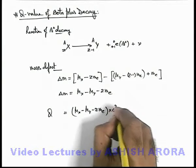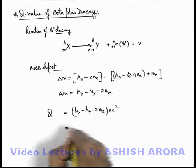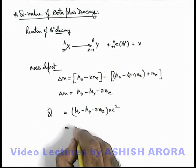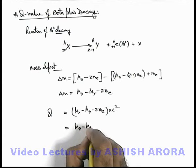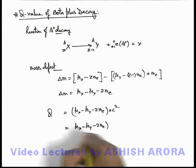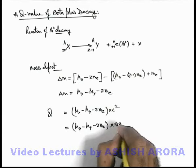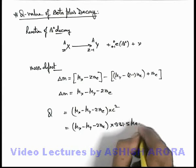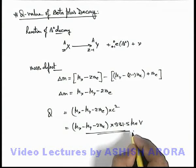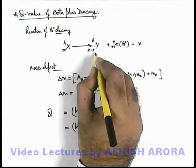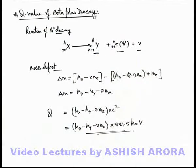Multiplied by c squared, or if the masses are available in amu we can use M_X minus M_Y minus 2 M_e multiplied by 931.5 million electron volts. That is the Q value released, which is shared among daughter nucleus, beta particle, and neutrino.